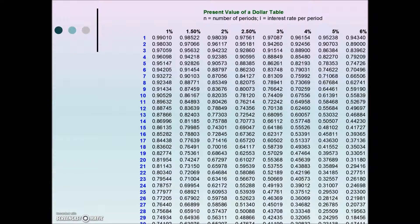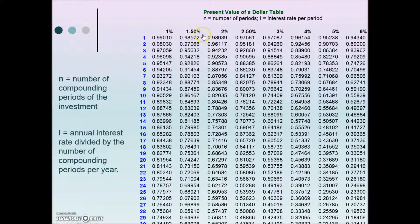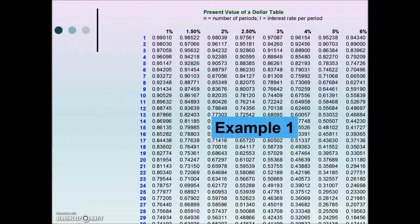Here is a present value table. We have n representing the number of compounding periods in the investment and that's what this first column is. Similar to future value, we also need to calculate what i, the annual interest rate divided by the number of compounding periods per year. That i value is represented here in each one of these columns. So let's see how this works.